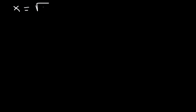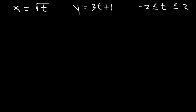Now let's work on another example. Let's say that x is equal to the square root of t and y is 3t plus 1. Let's modify this: t is equal to or greater than 0. So let's try that problem.